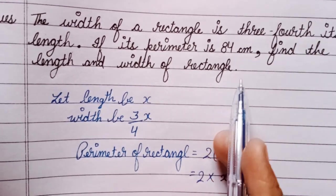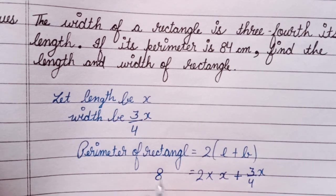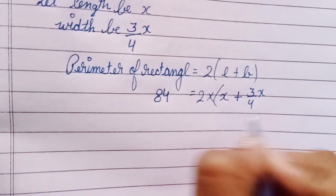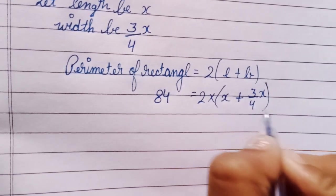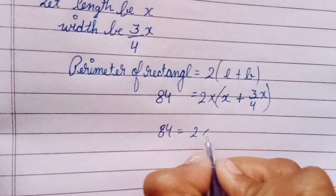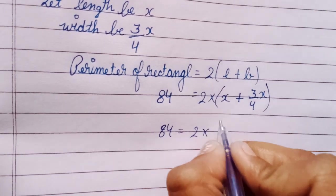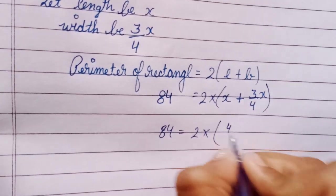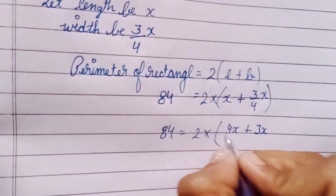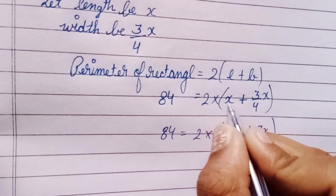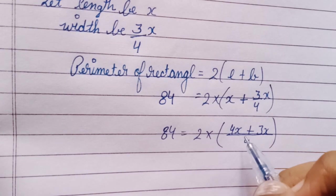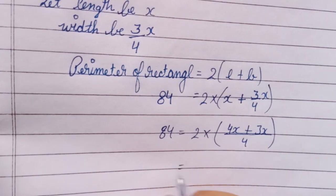Now for adding length and breadth, we can take the LCM. So this is 4x plus 3x upon 4. Four into x we will get 4x, that's why I have written 4x.